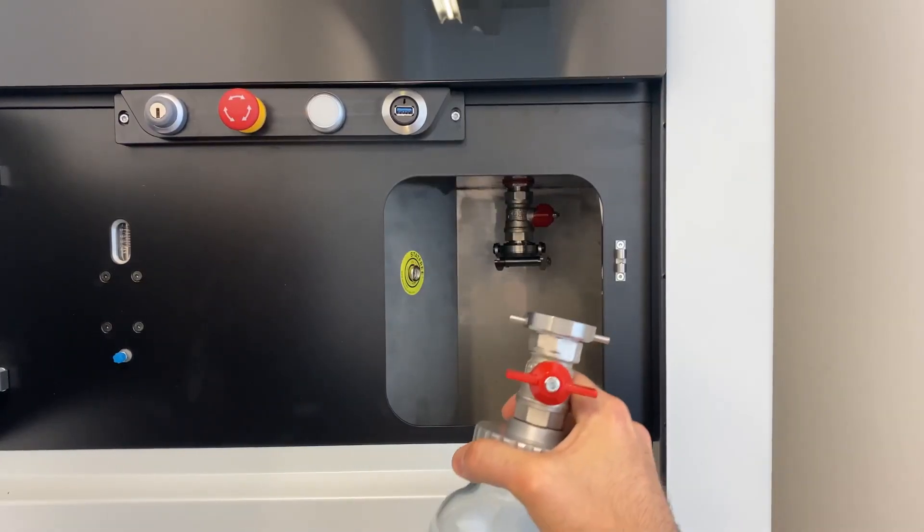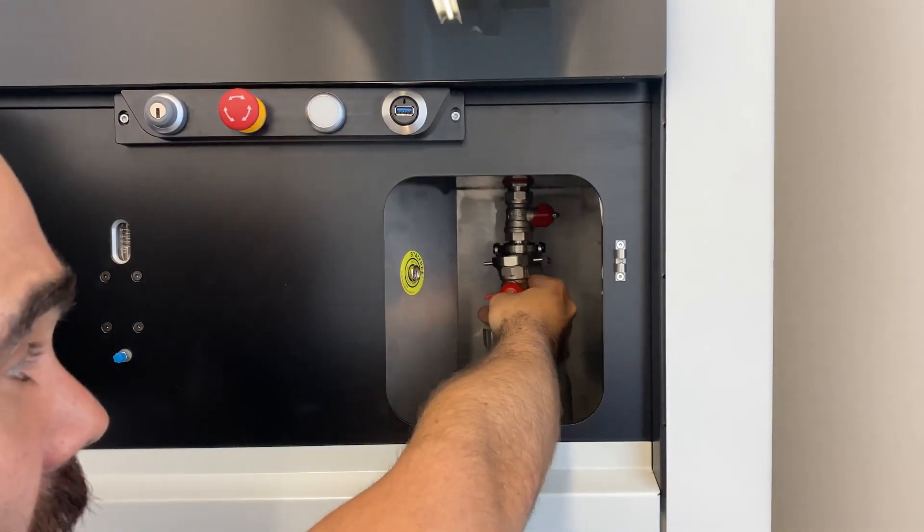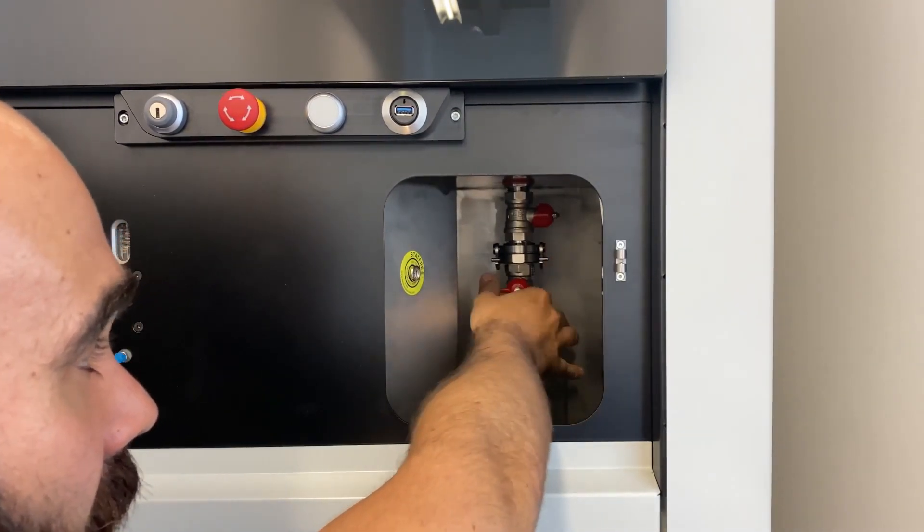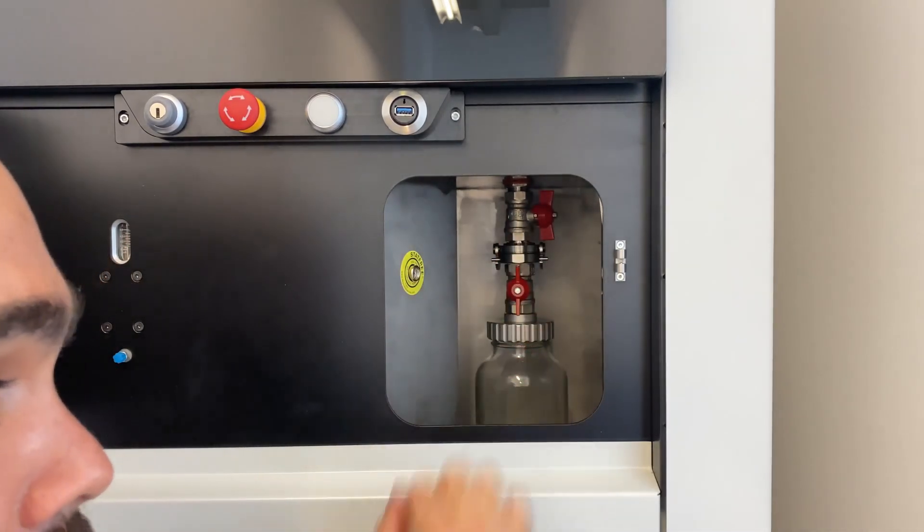Now we'll show you how to attach the overflow bottle. First, carefully put it inside, connect the two flanges, close it, then open both valves so that the powder can go from the machine to the overflow bottle.